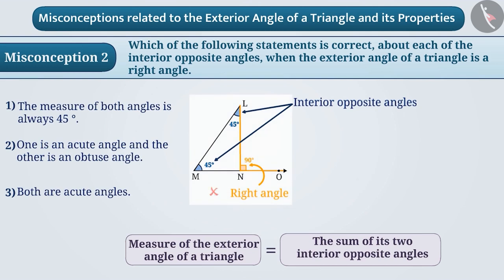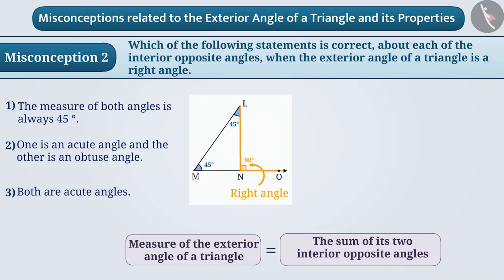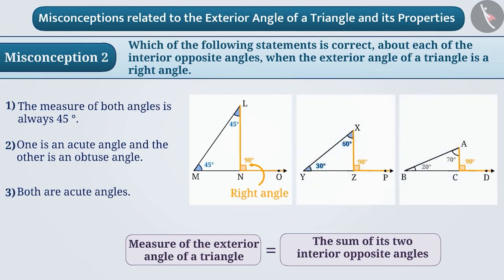But this is a wrong understanding, because the measure of the interior opposite angles can be different from 45 degrees. For instance, they can be 30 degrees and 60 degrees, or 20 degrees and 70 degrees. Hence, option 1 is incorrect.